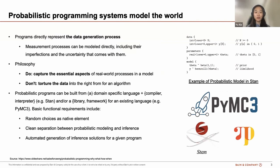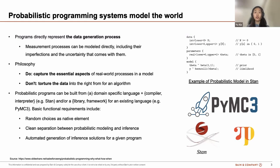Let's jump to a quick introduction of probabilistic programming. At its core, probabilistic programming allows us to represent the data generation process directly through code. This means we can model the measurement process, including its imperfections and the inherent uncertainty they entail. The philosophy behind it is simple: we try to capture the essential aspects of real-world processes in a model and try not to torture the data into the right format for an algorithm.